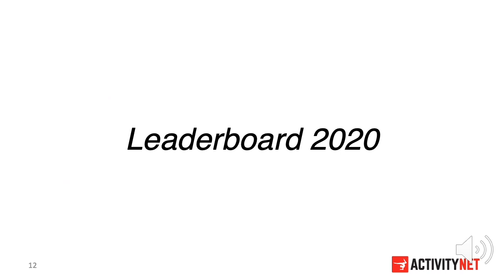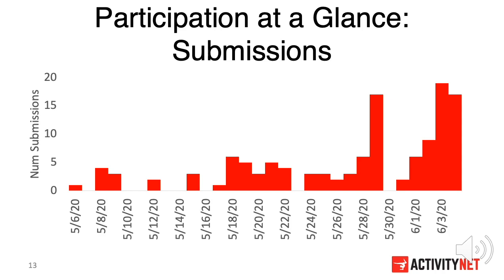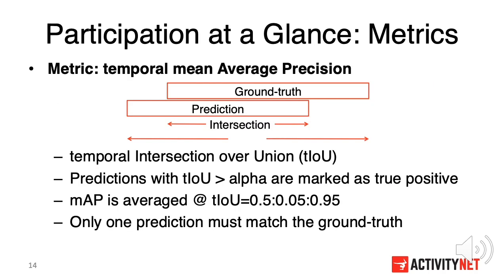Now let's see the submissions from this year. Our evaluation server opened on May 5th, and the majority of the submissions were uploaded in the last week before the server was closed. Our server evaluates the submission by temporal mean average precision. For any prediction in the submission file, it is marked as positive if the TIoU, the temporal intersection over union, is greater than some alpha. Otherwise, it is considered as a false positive. We average the mean average precision at 10 different alpha values from 0.5 to 0.95. Also, only one prediction must match with the ground truth, meaning we penalize duplicate predictions at evaluation time.